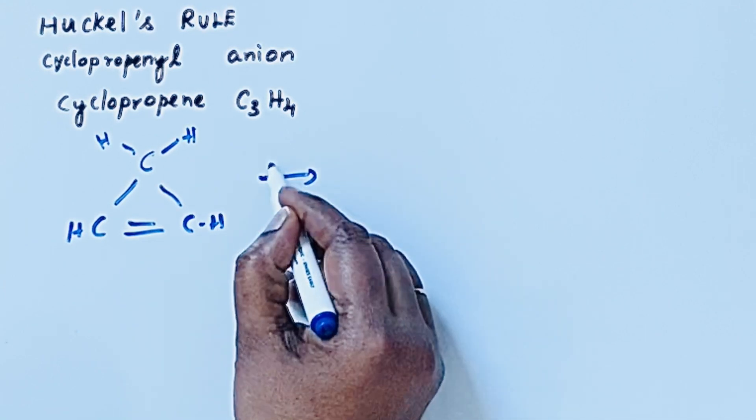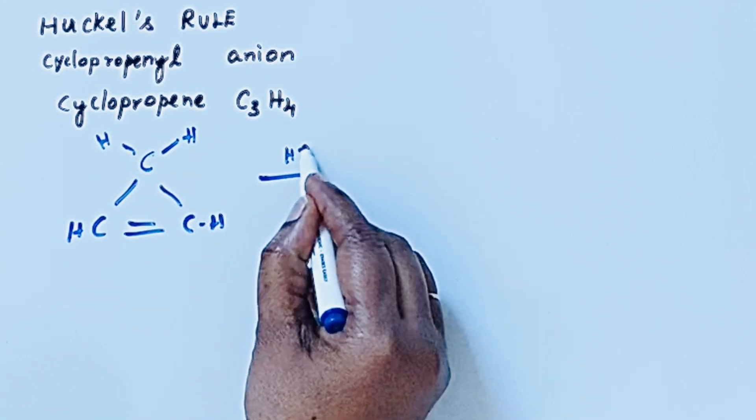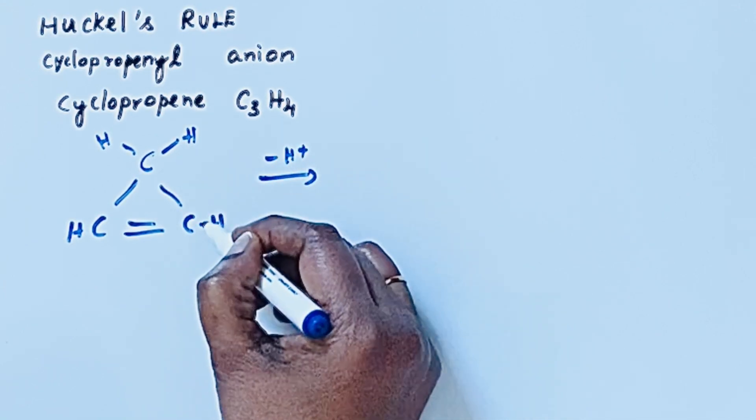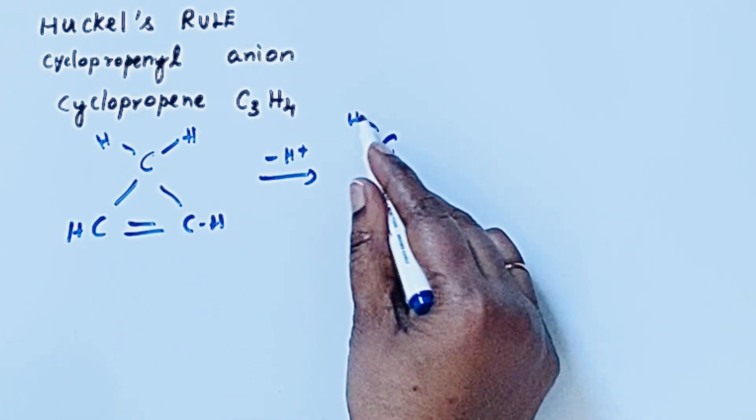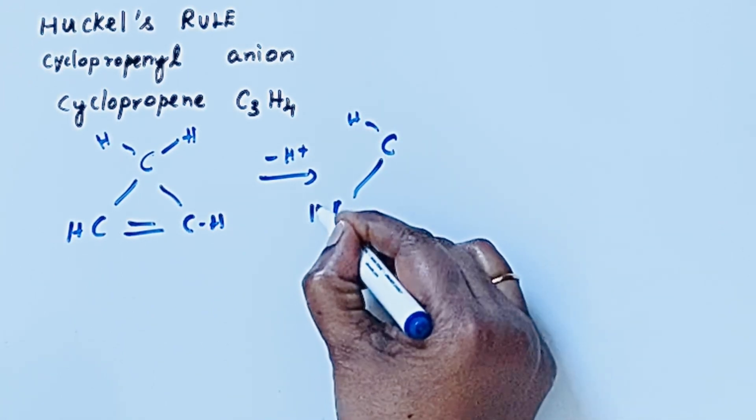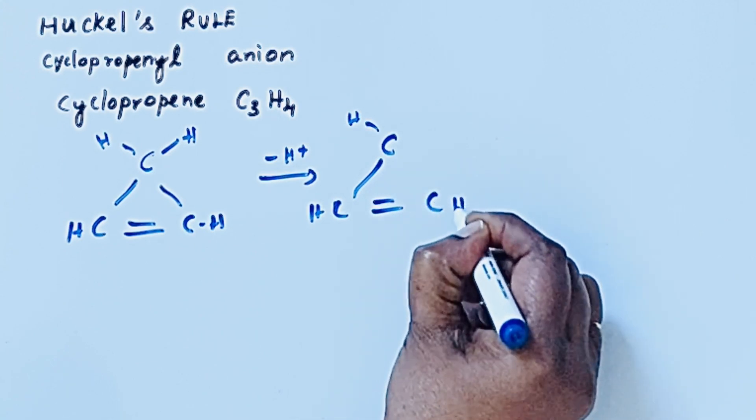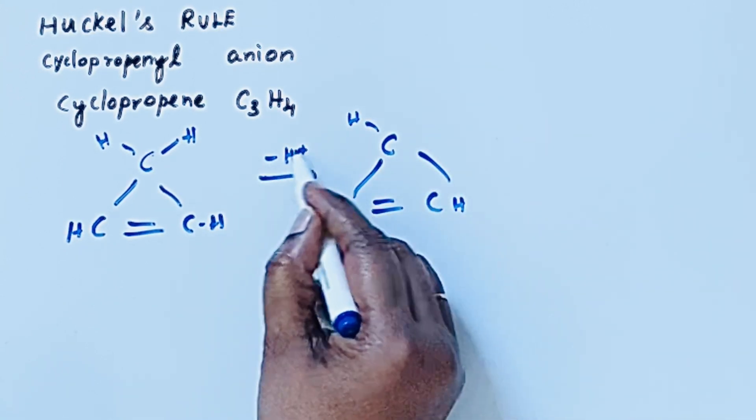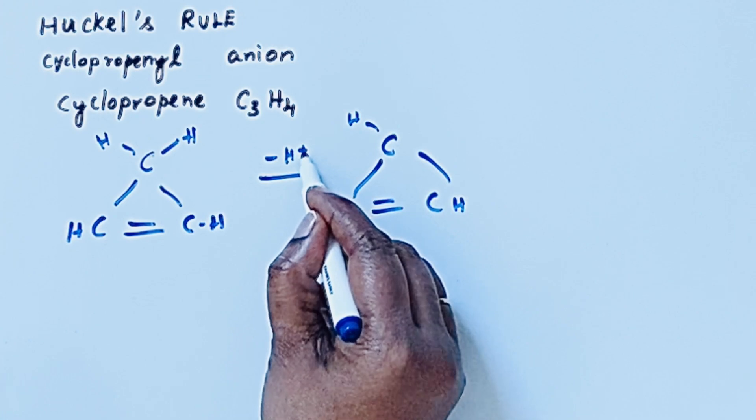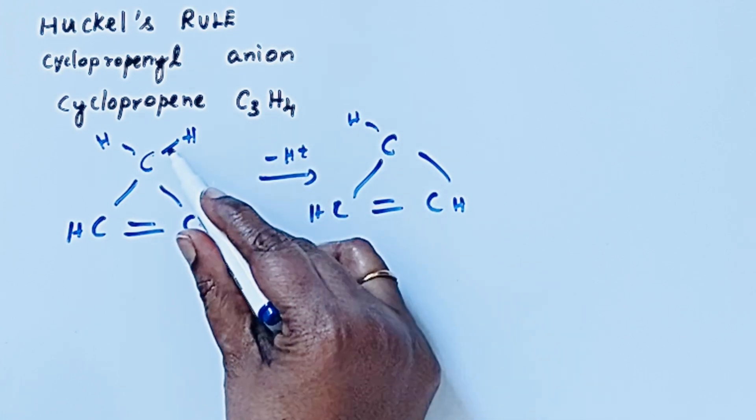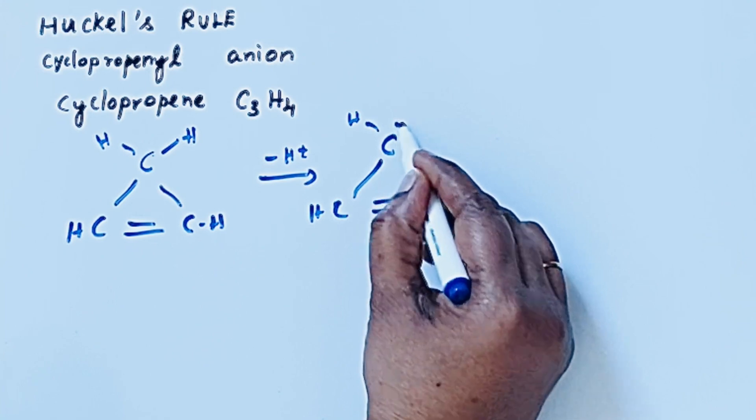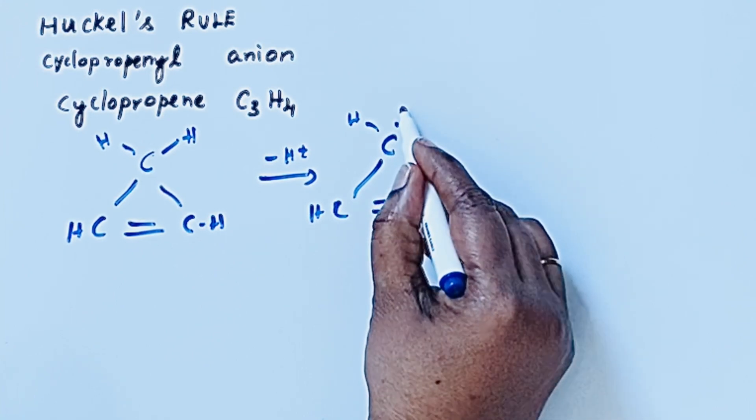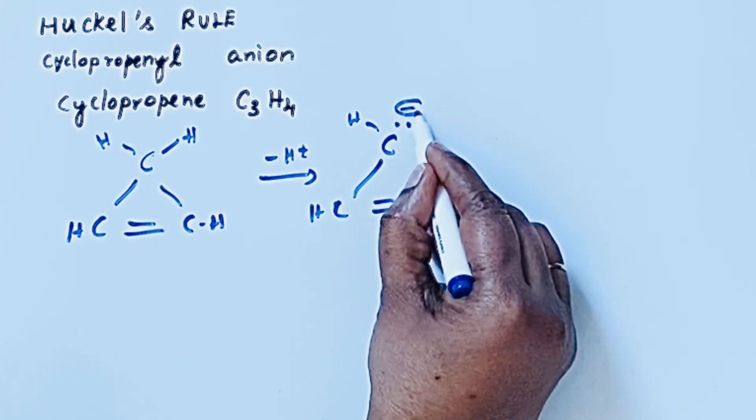So whenever H plus ions are lost from this compound then we will get again CH double bond CH. So this H plus ion is removed. That means it loses the electrons for the bond formations. Because of that there is a lone pair on this carbon and it increases the negative charge.